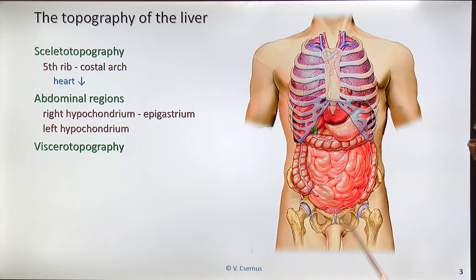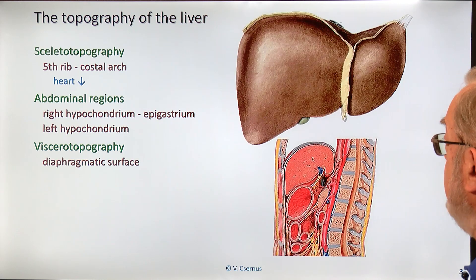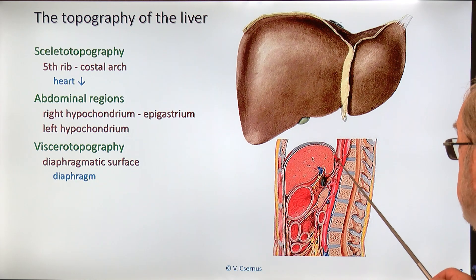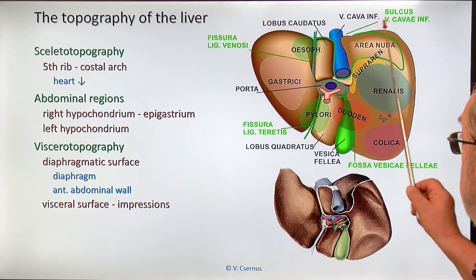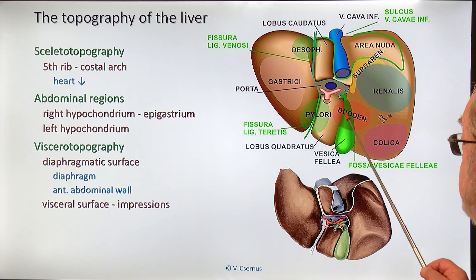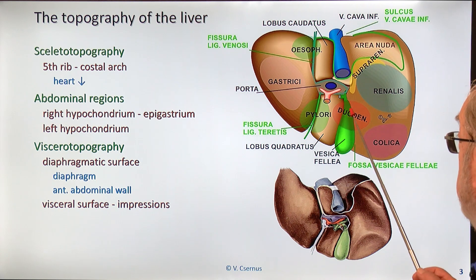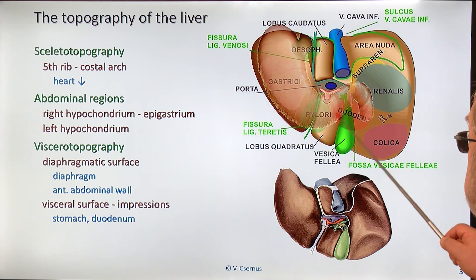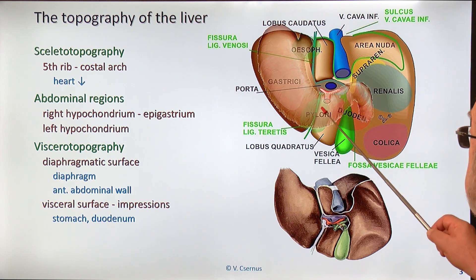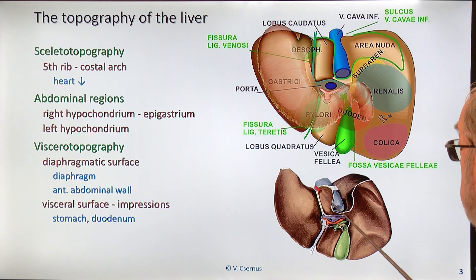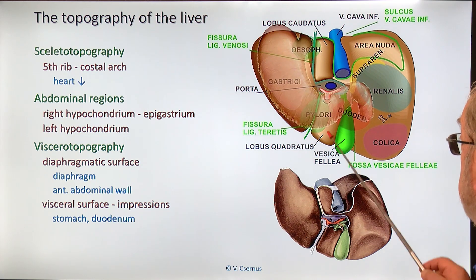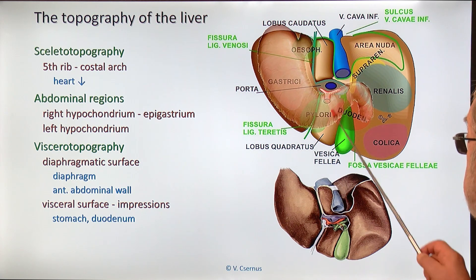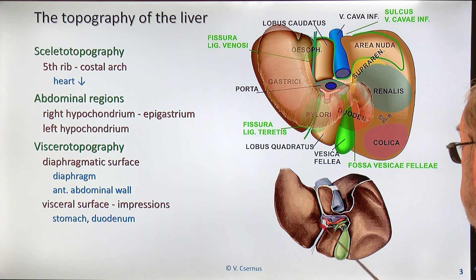Which part of the liver is in contact with which adjacent organ? The diaphragmatic surface is relatively simple — it contacts the diaphragm along its entire surface and partially the anterior abdominal wall. The visceral surface is more complicated and contacts many organs, leaving impressions on the liver. Here you can see the gastric impression from the stomach. The esophagus — located between the caudate lobe and the left lobe — makes an esophageal impression. The body of the stomach makes the large gastric impression. The pylorus, a solid ball-shaped structure, makes a deeper impression, and the duodenum also leaves an impression.